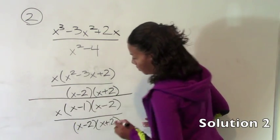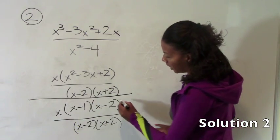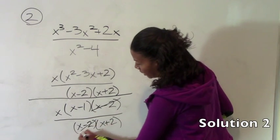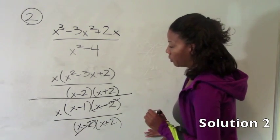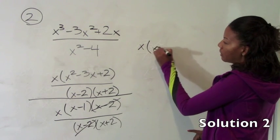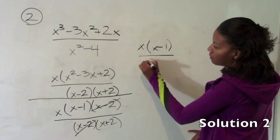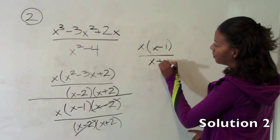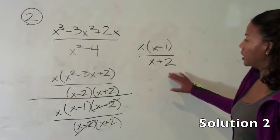So let me separate this for you guys visually. So now you'll see that we can cross out the x minus 2's and then we are left with x times the quantity x minus 1 divided by x plus 2. So the answer here is b.